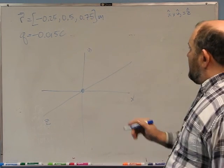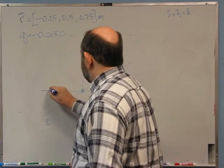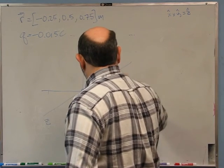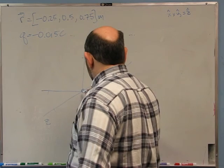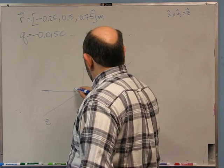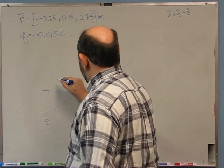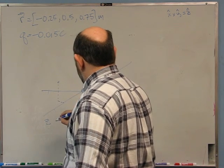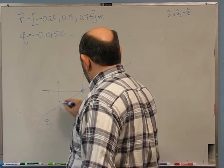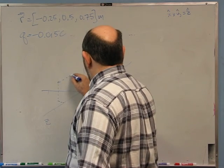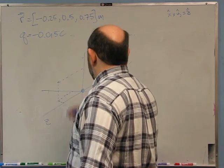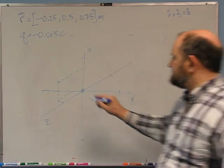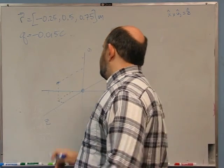The position where we want the field is minus 0.25 in X, 0.5 in Y, and 0.75 in Z. So it's going to be something like this — 0.75 in Z, about 0.5 in Y, and minus 0.25 in X. This is the position where we want the electric field.